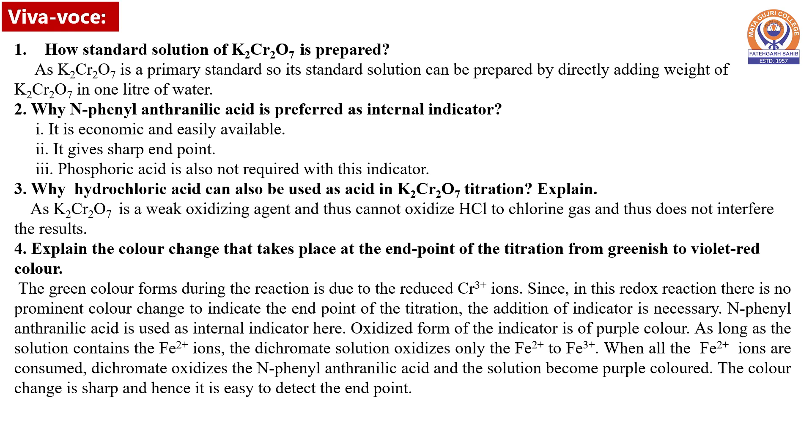Why can hydrochloric acid also be used as acid in potassium dichromate titration? Since potassium dichromate is a weak oxidizing agent, it cannot oxidize hydrochloric acid to chlorine gas and thus will not interfere with the results.